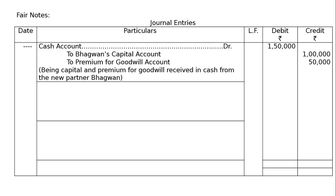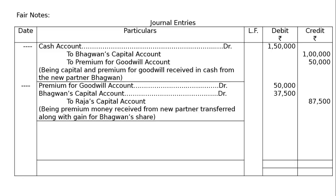Being capital and premium for goodwill received in cash from new partner. Next entry: Premium for Goodwill Account debited Rs. 50,000, Bhagwan's Capital Account debited Rs. 37,500 due to his gain, to Anu's Capital Account Rs. 87,500 due to his only sacrifice. Being premium money received from new partner transferred, with gain for Bhagwan's share, to the old sacrificing partner. Bhagwan is also an old partner but Bhagwan is gaining, hence the gaining partner's capital account is debited to the sacrificing partner's capital account.